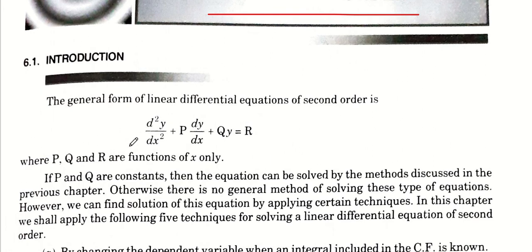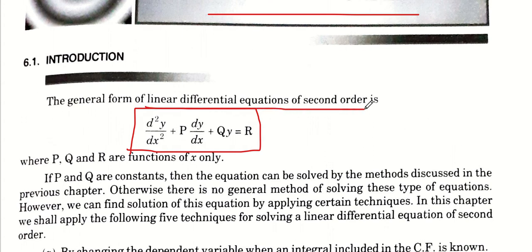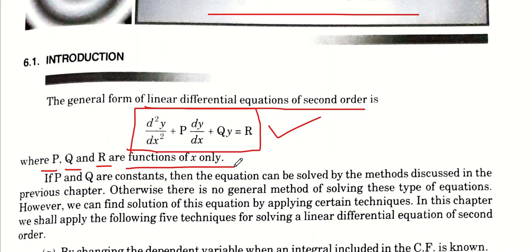We will study the general form of a Linear Differential Equation of Second Order. Note that in the general form, the coefficient of the second order derivative is 1. When you have any question in this chapter, if the coefficient of the second order derivative is different, divide the whole equation. Then compare it to the general equation: the coefficient of dy/dx we call P, the coefficient of y we call Q, and the right-side term we call R. These values are all functions of variable x only.